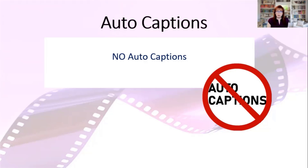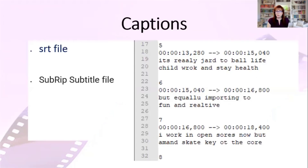Auto captions are generated when you upload a video to YouTube, which then creates what is called an SRT file — a sub-RIP subtitle file. In this SRT file there are three standard items: one is the number of the frame, every frame within the video has a number; the second is the start and stop time — the duration of that frame, how long it is visible; and the third is the captions. These three items are standard format in all SRT files.